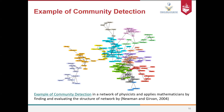A basic example of community detection is a co-authorship graph in different topics: biology, math, computer science, and so on. We can see clusters of authors who work together, and those clusters represent their fields of work such as physics, math, and computer science. These clusters are revealed through community detection.